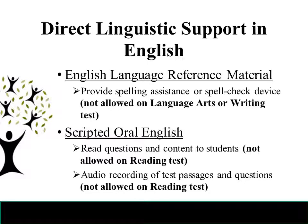The first type of accommodations provides direct linguistic support in English. An example is English language reference material — providing spelling assistance or a spell check device. This is not allowed on the language arts or writing test.